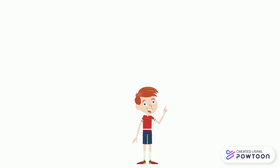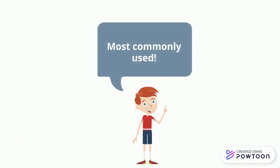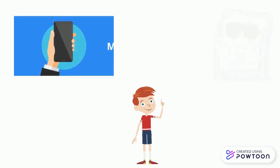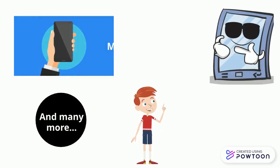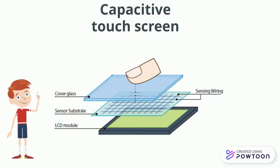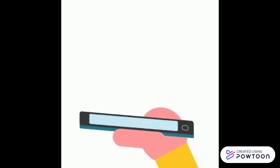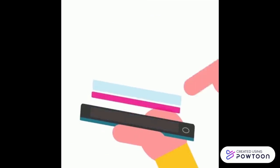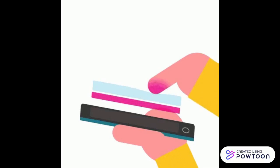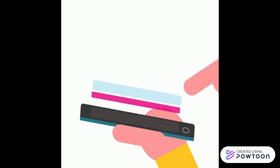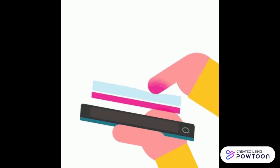Capacitive touchscreens are the most commonly used touchscreens. They are mainly used in smartphones, tablets, personal digital assistants, and many more devices. A capacitive touchscreen is made of two main parts: a glass screen and a conductive metal like indium tin oxide. The metal forms a grid-like structure with electricity flowing through it. So when our finger comes in contact with the screen, it causes a disturbance in the electric current flowing through the grid, which is perceived as touch.